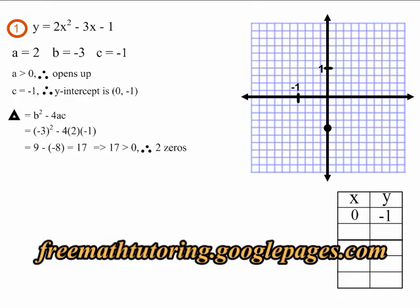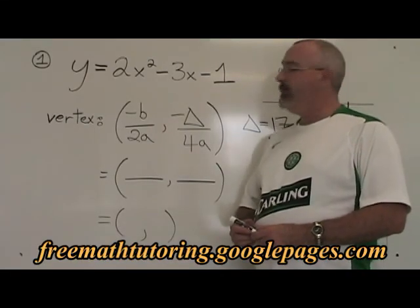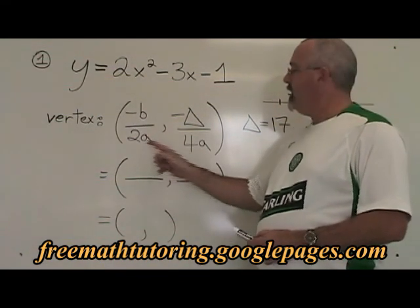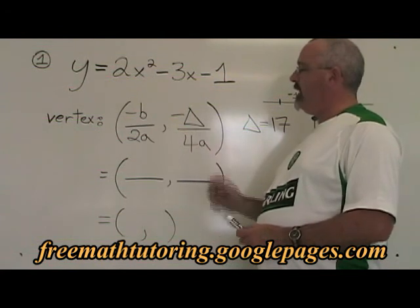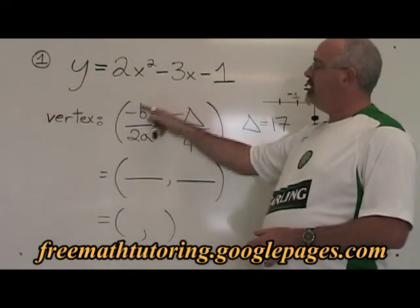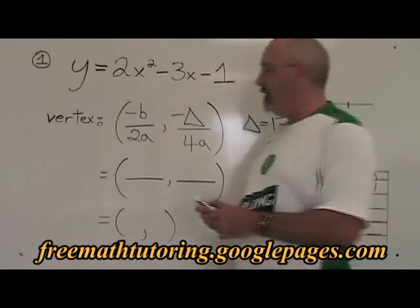This is what example one looks like before we find the vertex. The formula for our vertex is negative b over 2a for the x coordinate, negative delta over 4a for the y coordinate. Our b is negative 3, so the negative of b is the negative of negative 3.